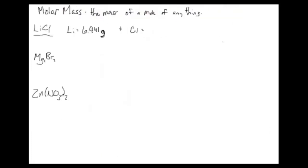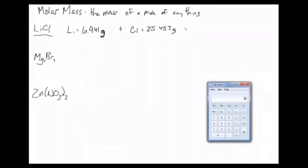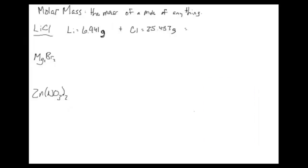Chlorine has a mass of 35.453 grams. Using a calculator, we add 6.941 plus 35.453 to get 42.394 grams. Since molar mass is the mass of a mole of something, our unit is grams per mole — signifying a full mole, or 6.02 times 10 to the 23rd particles. So the molar mass of lithium chloride is 42.394 g/mol.